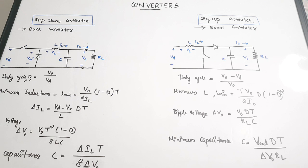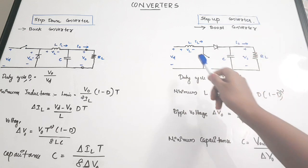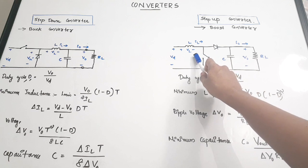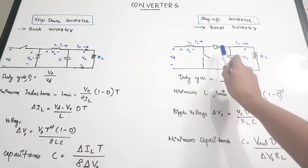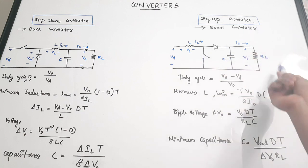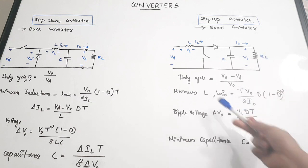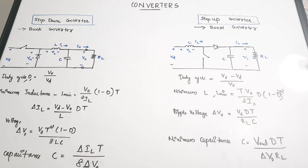The boost converter or step-up converter produces an output voltage approximately five times the input voltage, so there is an increase or multiplication in voltage. The circuit uses the same components as the buck converter but with a different connection: the inductance comes first, followed by a diode in series, then a capacitance in parallel, and the load with output voltage Vout.